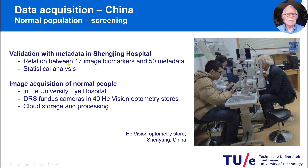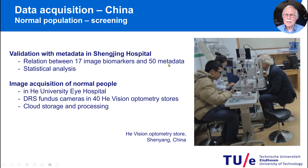So finally we went to establish the relation between 17 image biomarkers and 15 metadata variables. With metadata we mean all kinds of other information from the patient: medicine use, duration of the disease, but also lifestyle measurements — how much do you drink, how much do you smoke, what is your age, what is your weight, etc. So we did a lot of correlation studies.